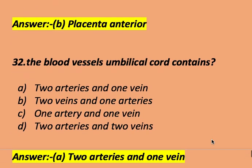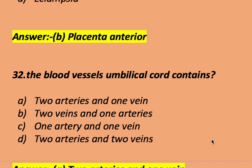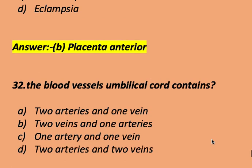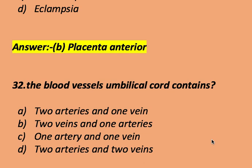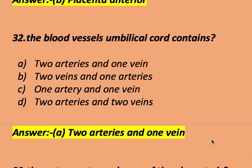The umbilical cord contains: two arteries and one vein, two veins and one artery, one artery and one vein, or two arteries and two veins. The right answer is two arteries and one vein. The umbilical cord contains two arteries and one vein.